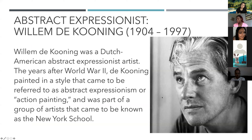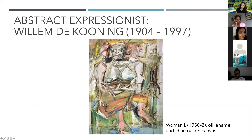The next abstract expressionist artist is William de Kooning. De Kooning was a Dutch-American abstract expressionist artist. The years after World War II, de Kooning painted in a style referred to as abstract expressionism or action painting, as part of the group of artists known as the New York School. De Kooning's well-known Woman series, begun in 1950 and culminating in Woman VI, owes much to Pablo Picasso — not least in the aggressive, penetrative breaking apart of the figures and the spaces around them.